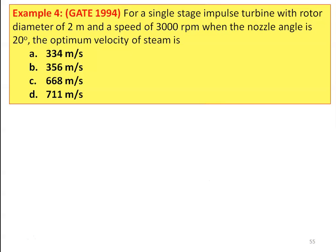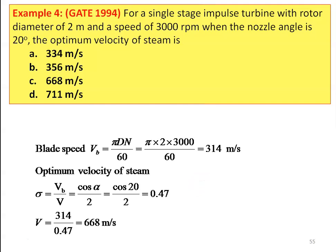Next question from the GATE question paper 1994: For a single stage impulse turbine with rotor diameter 2 m and speed 3000 RPM, nozzle angle 20 degrees, find the optimum velocity of the steam. Options: 334, 356, 668, 711 m/s. Blade speed Vb = π d n / 60 = π × 2 × 3000 / 60 = 314 m/s. For optimum blade speed ratio, sigma = Vb / V = cos alpha / 2 = cos 20 / 2 = 0.47. Optimum steam velocity V = 314 / 0.47 = 668 m/s. Correct answer: 668 m/s.